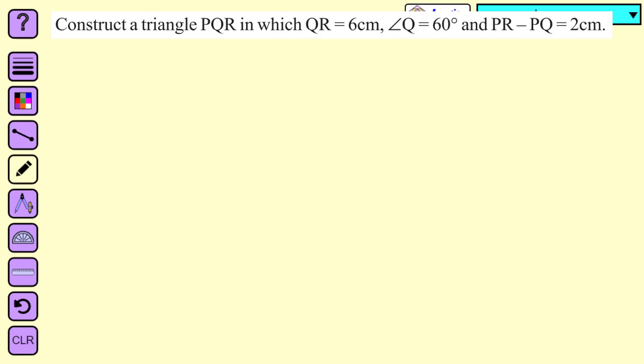In this lecture, we will construct a triangle PQR in which QR is equal to 6 cm, measure of angle Q is equal to 60 degrees, and PR minus PQ is equal to 2 cm.